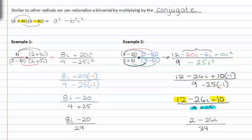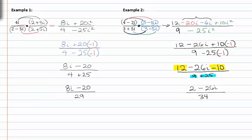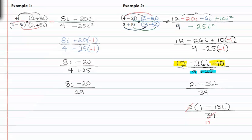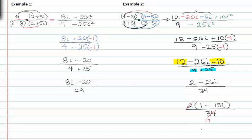At this point it may be tempting to quit and assume that you've simplified it as far as you can. But we should notice that there's a common factor between two and negative twenty six i. The common factor is two, so once we factor that out we get two times the quantity one minus thirteen i all over thirty four. Let's go ahead and divide out the common factor which is two. Thirty four divided by two is seventeen. And so now we can say that we're completely done.